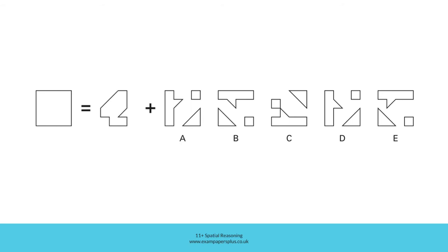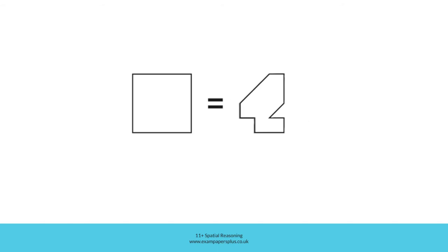The shapes may have rotated, so they could be in the wrong orientation. To help us answer the question accurately, we can take a closer look at this section. As you can see, if I place this shape into the target shape, then there will be spaces where other shapes will be needed to create the complete target shape.